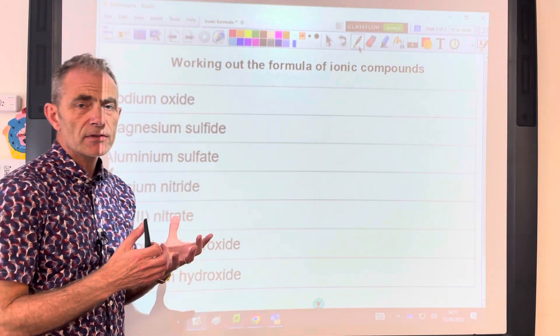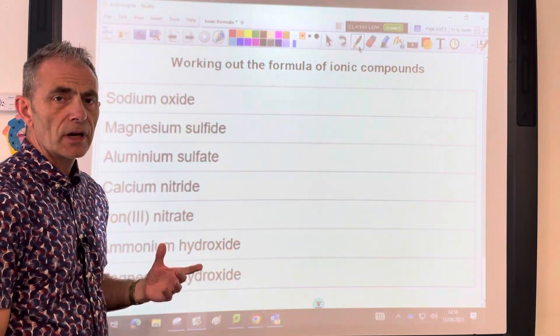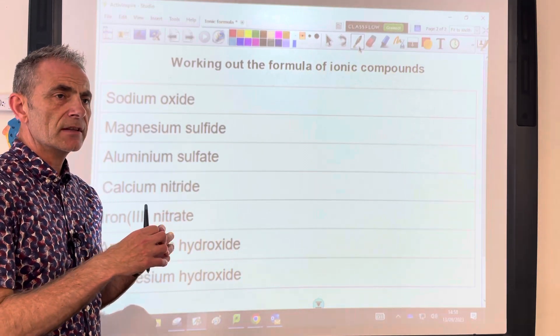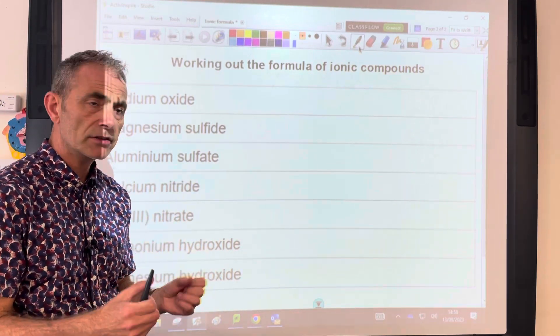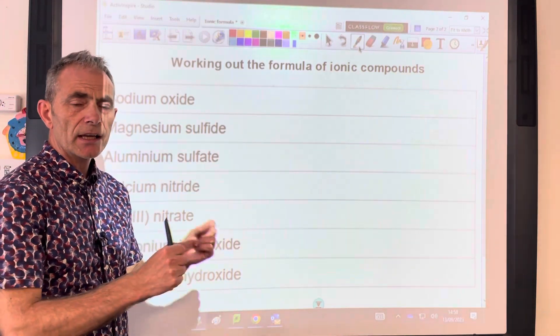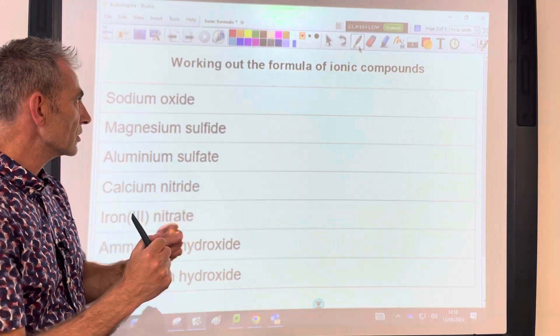Ionic compounds contain positive ions, called cations, and negative ions, which we call anions. Basically what we need to make sure is that there's no overall charge in the compound, and we do that by multiplying ions out so the ratio works for no overall charge.